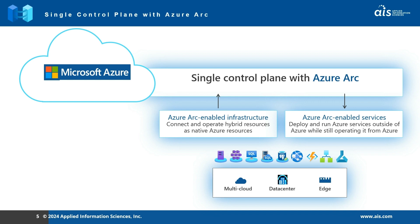On the other hand, Azure Arc-enabled services allows you to deploy and run Azure services outside of Azure while maintaining management from Azure itself. It's like taking the best of Azure wherever you go. Whether you have applications that need to remain on-premise due to latency, regulations, or other reasons, or even if you are utilizing services from other cloud providers, Azure Arc ensures consistency in operating, managing, and security.